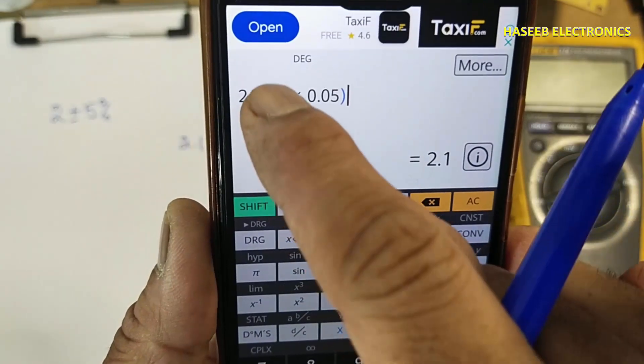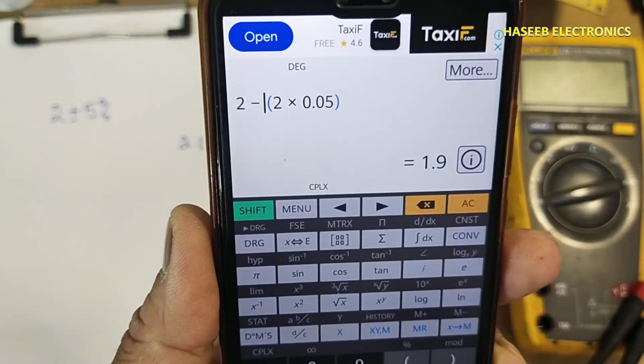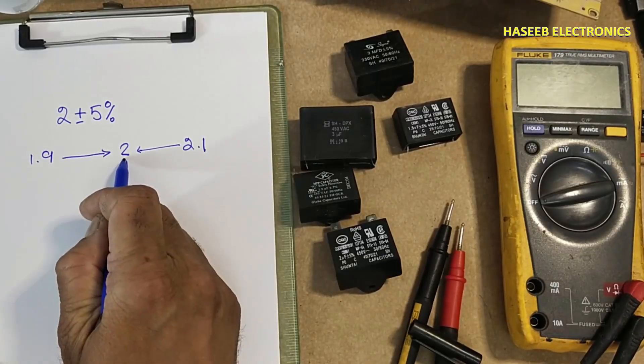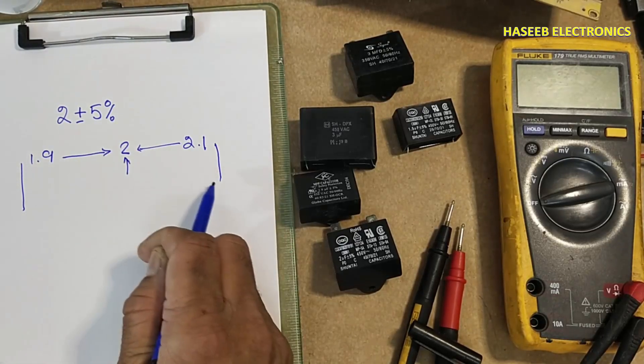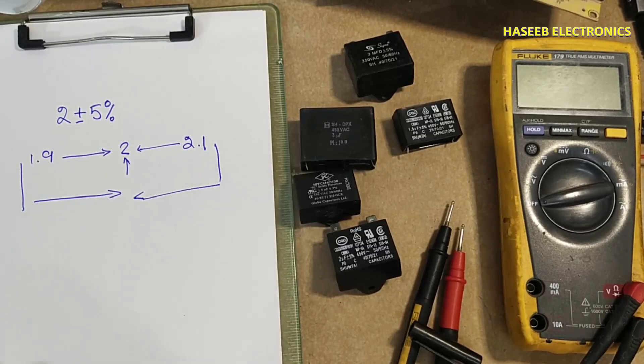And if we minus it, it is 1.9. This is our central value, this is lower limit, and this is upper limit. The value must be in between this window.